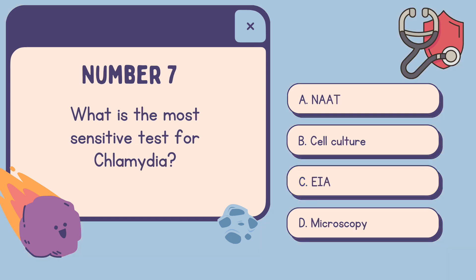Number seven: What is the most sensitive test for Chlamydia? A. NAAT. B. Cell culture. C. EIA. D. Microscopy. The correct answer is A. NAAT.